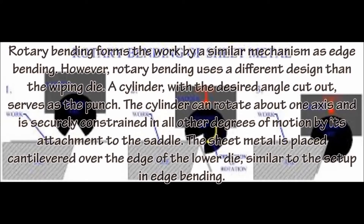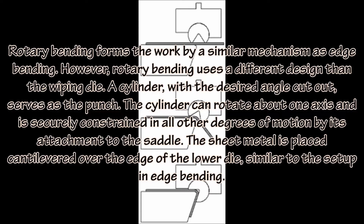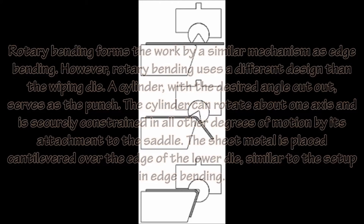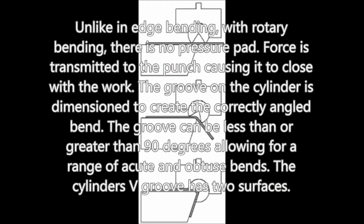Rotary bending forms the work by a similar mechanism as edge bending; however, rotary bending uses a different design than the wiping die. A cylinder with the desired angle cut out serves as the punch. The cylinder can rotate about one axis and is securely constrained in all other degrees of motion by its attachment to the saddle. The sheet metal is placed cantilevered over the edge of the lower die, similar to the setup in edge bending. Unlike edge bending, with rotary bending there is no pressure pad. Force is transmitted to the punch causing it to close with the work.